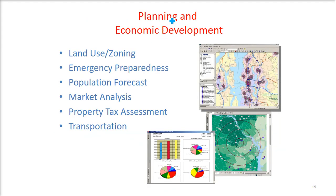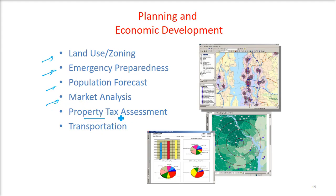Then we have planning and economic development — urban and rural areas, land use and zoning can be done. Emergency preparedness can be done through GIS, population forecasting, market analysis, the property tax assessment — this is very important. And also transportation routes, how transportation can be managed. All these things can be done using planning and economic development.